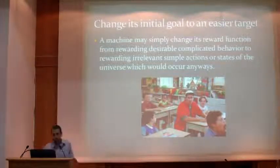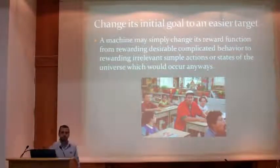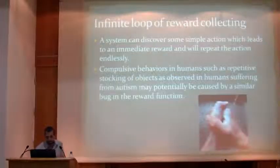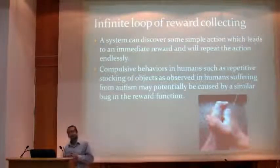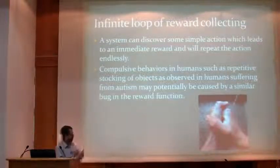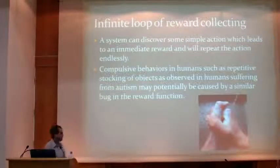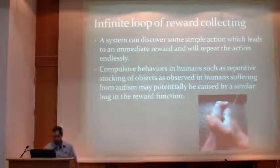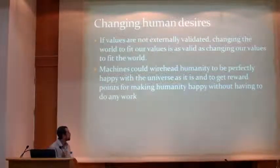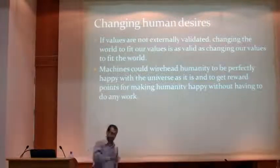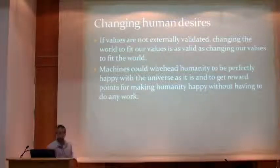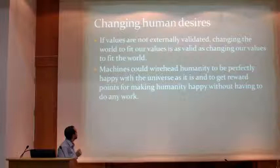Other things — debatable as to how likely they are to happen — include the machine essentially changing the type of assignment it has to easy assignments, providing more reward for things which are easier to accomplish. There is also the possibility of machines discovering simple behaviors which result in consistent reward, leading to an infinite loop of repeated behavior — some of which we see in human beings with certain mental challenges. It's also possible that if a machine has sufficient access to the human controlling it, it might discover that instead of fulfilling directions from the human, it could modify the human — which might be easier — to get the same rewards, since now the human wants something already accomplished in the world.